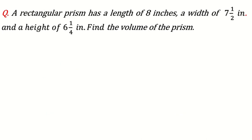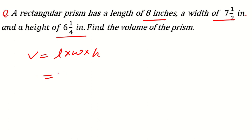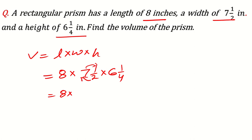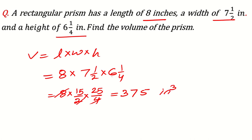Another question: a rectangular prism has a length of 8 inches, width of 7½ inches, and height of 6¼ inches — find the volume. Volume = L × W × H. Convert mixed fractions: 7½ = 15/2 and 6¼ = 25/4. So Volume = 8 × (15/2) × (25/4). The 8 and the denominators cancel (4 × 2 = 8), leaving 15 × 25 = 375 cubic inches.